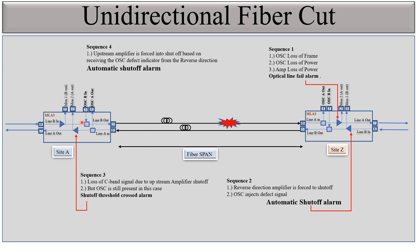The upstream amplifier is forced into set-off based on receiving the OSC defect indication from the reverse direction. The OSC signal coming from port number 8 carries the defect indication, and on the basis of that signal, this amplifier will automatically set off.